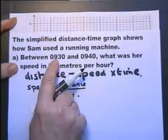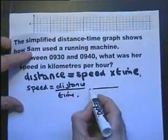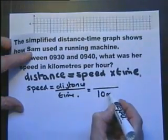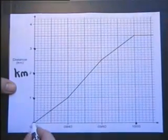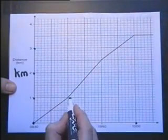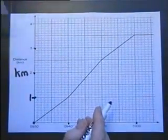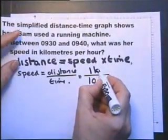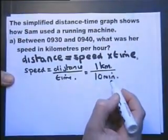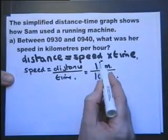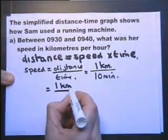Between 9:30 and 9:40, the time is 10 minutes. Now let's see what the distance is. From the graph, there's 9:30, there's 9:40, so the distance is 1 kilometer. Because we're doing kilometers per hour, we have to change it so that it is kilometers over hours.